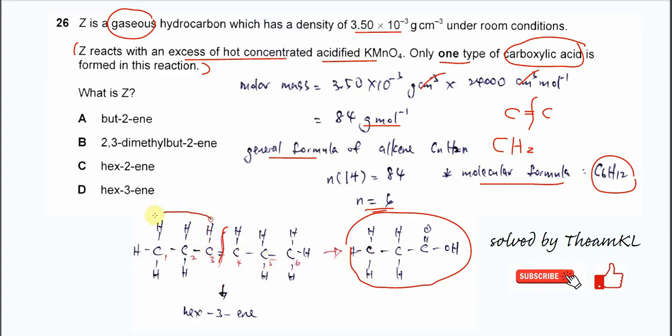These two parts will form the same carboxylic acid, which is propanoic acid. Therefore, the answer must be hex-3-ene. That's all. Thank you.